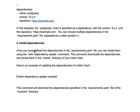Once you have defined the dependencies inside your requirements.yml file, you can install them using the helm dependency update command. This command downloads the dependencies and stores them in the charts directory of your helm chart. In the background, when you run this command, it looks for the dependencies, goes to those URLs where they can be downloaded, downloads those charts, and puts them inside your current chart — ensuring all dependencies are available when your application is deployed.